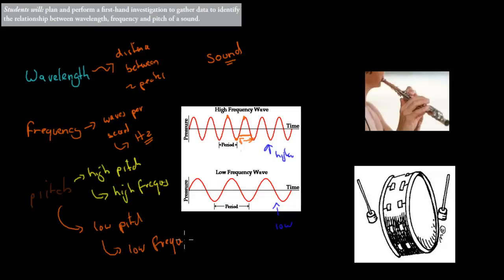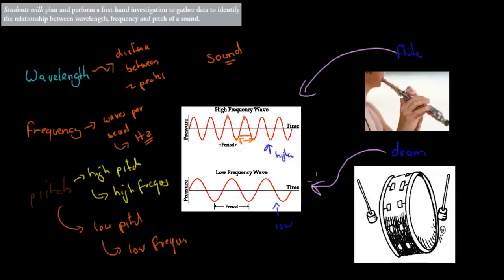For example, the flute and the drum. A flute would have a sound like this — that's my best attempt — whereas a drum would be like this. The idea being one of them is really high, and that's the flute, and the other one is really low, and that's the drum. So if you look at the actual graphs they produce, the flute being a high frequency would produce a high pitch, high frequency wave shape, whereas the drum is low pitch, low frequency.